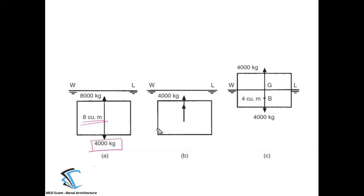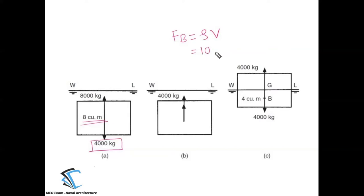As we saw in the video, there will be a buoyant force acting in the upward direction. The formula for buoyant force is FB = rho × V. Taking fresh water density as 1000 and V as 8 meter cube, the buoyant force is coming 8000 kg. So when the object is completely submerged at this instant, the buoyant force is 8000 kg upward and the weight is 4000 kg downward.